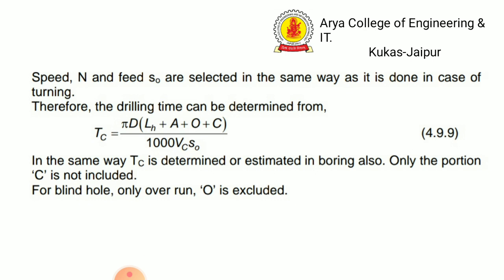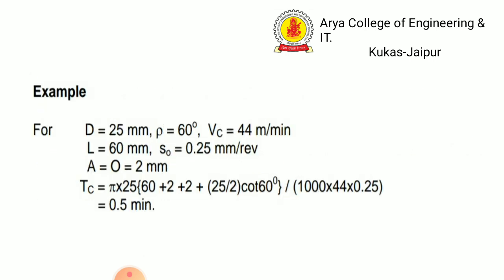For boring operations, the portion C is not included. For a blind hole, only the overrun O is excluded. Now we take an example for a drilling operation: D = 25 mm (diameter), tip half-angle ρ = 60°, cutting velocity Vc = 44 m/min, length of workpiece Lh = 60 mm, and feed S0 = 0.25 mm per revolution.